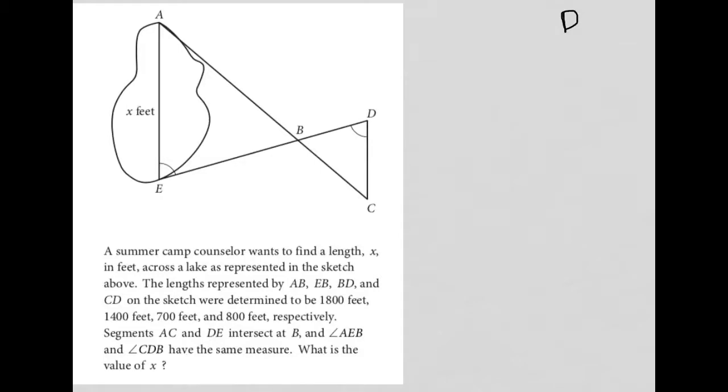All right, so a summer camp counselor wants to find a length X. We see X is here, so that's what we're trying to figure out, across a lake as represented in the sketch above. The lengths represented by AB, EB, BD, and CD on the sketch were determined to be 1,800 feet, so AB. It was the first one, so that's 1,800, so I'm going to label that as 1,800.